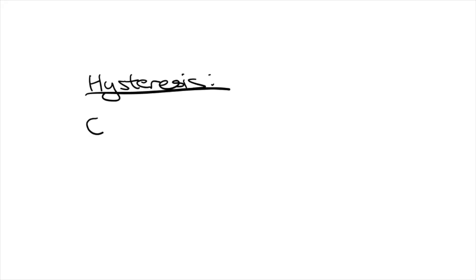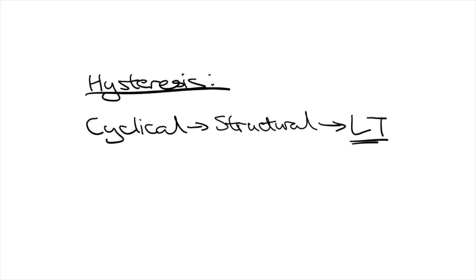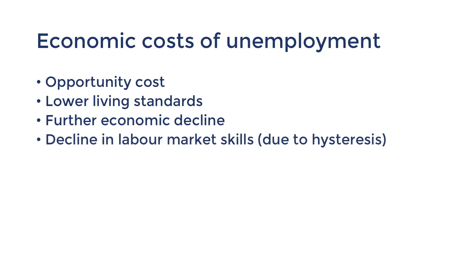Previously, I introduced the concept of hysteresis, which is a term used to describe the progression from temporary causes of unemployment to long-term unemployment. Declining labour market skills can result from people being unemployed for prolonged periods of time. This can happen because workers are not using their skills and may lose expertise, and they may miss out on opportunities to update their skills with on-the-job training. Other effects of hysteresis in long-term unemployment include loss of confidence over time and the increased difficulty of being re-employed compared to someone who's recently unemployed, due to the attached stigma.